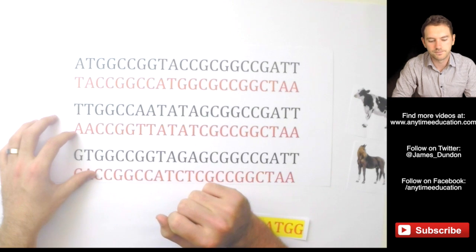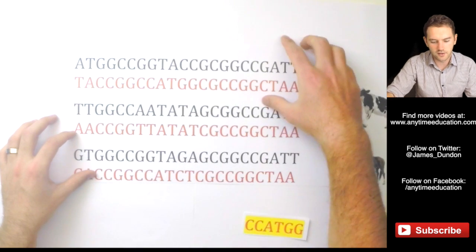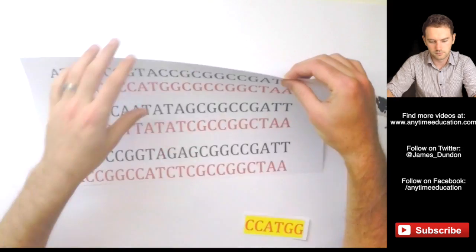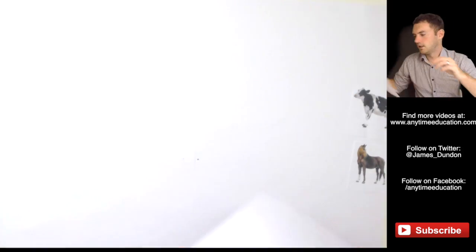What we want to be careful is we use restriction enzymes that aren't going to cut in the middle of our segment of DNA that we're looking for. Okay, so imagine these are all cut up, so to speak.